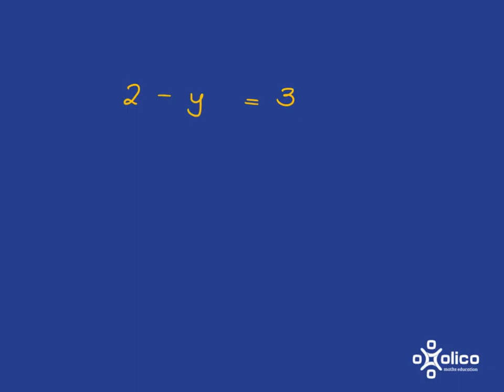So the first thing we want to do is get rid of that 2. So we're going to subtract 2 on the left, but obviously with an equation, what we do to the left, we also need to do to the right.